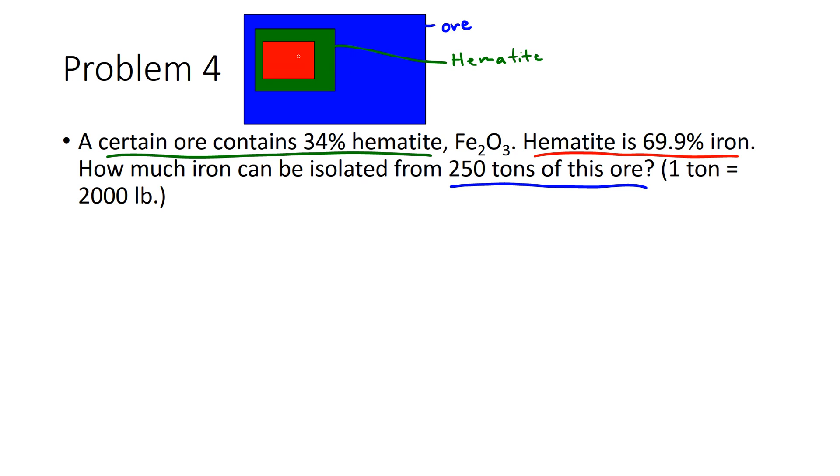And say that this is the iron. So to go from the mass of the ore to the mass of iron, what we have to do is two unit conversions.